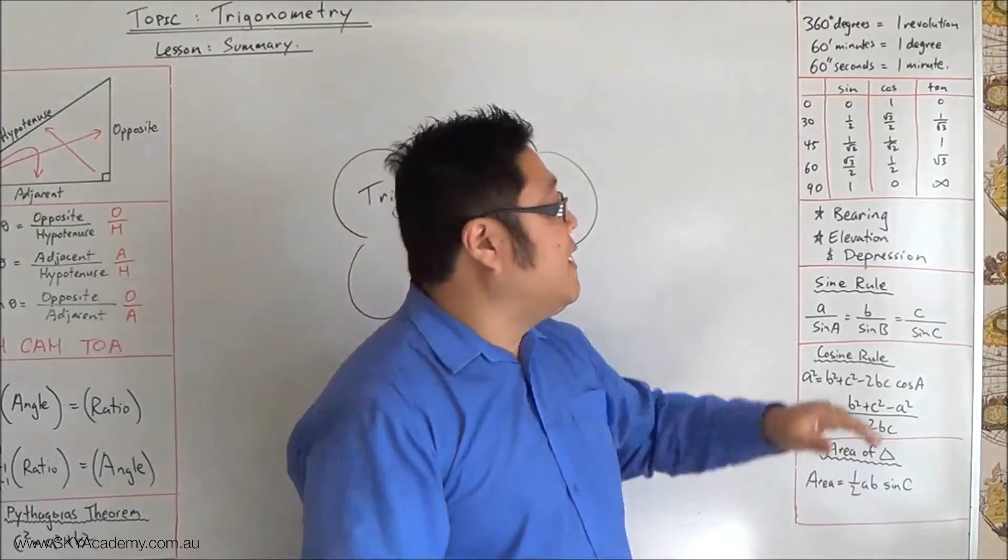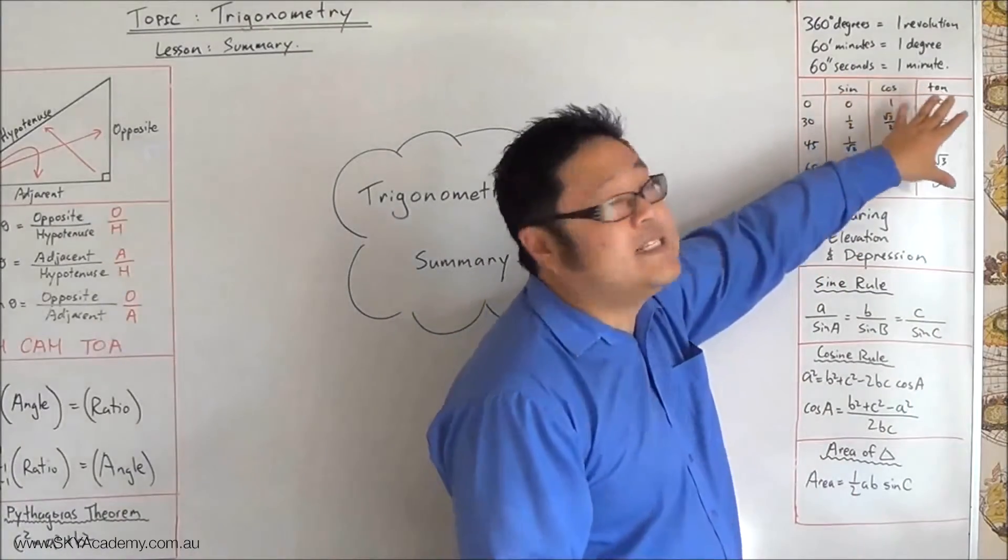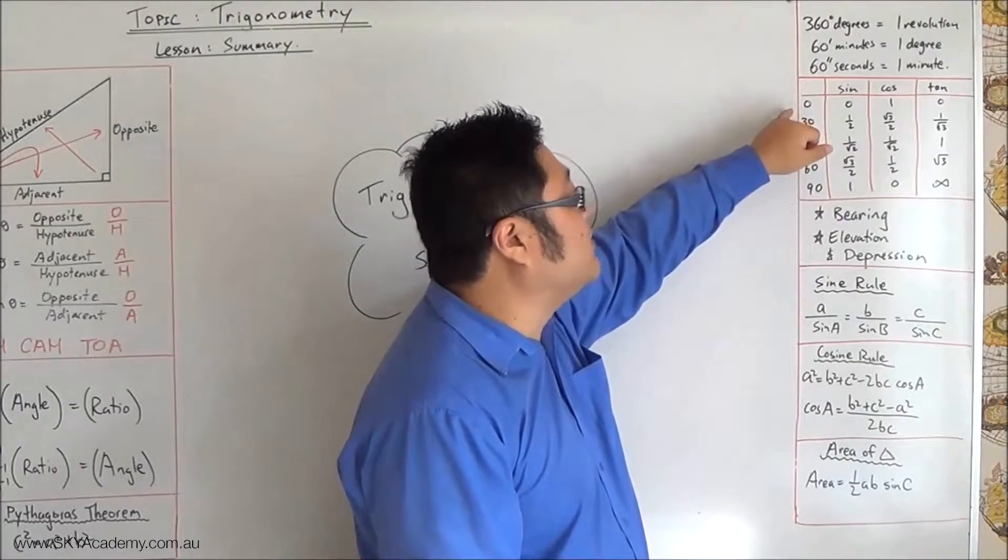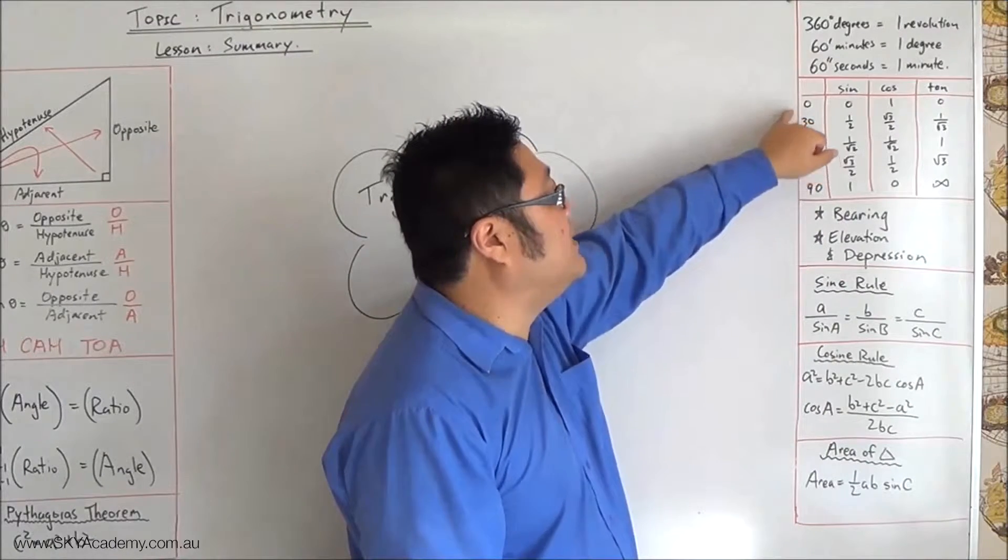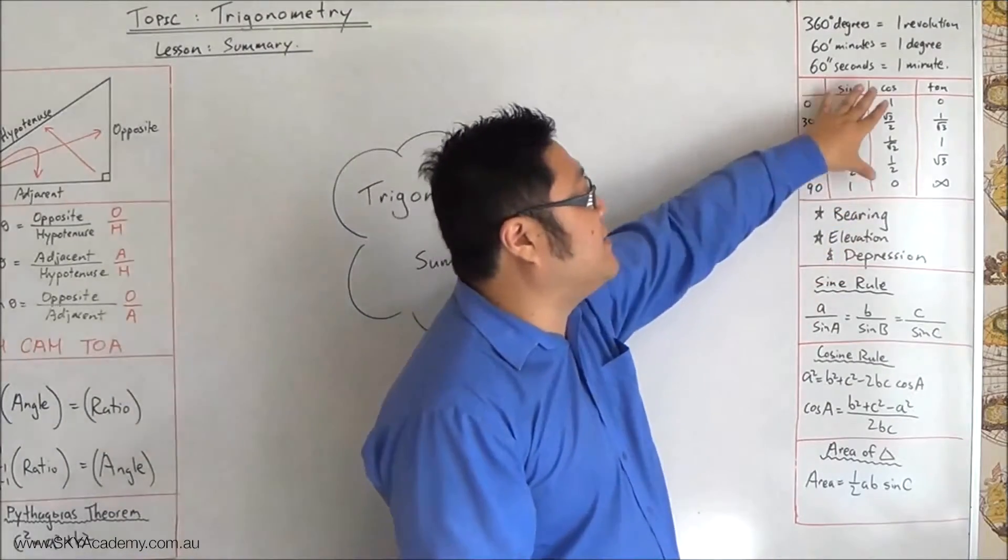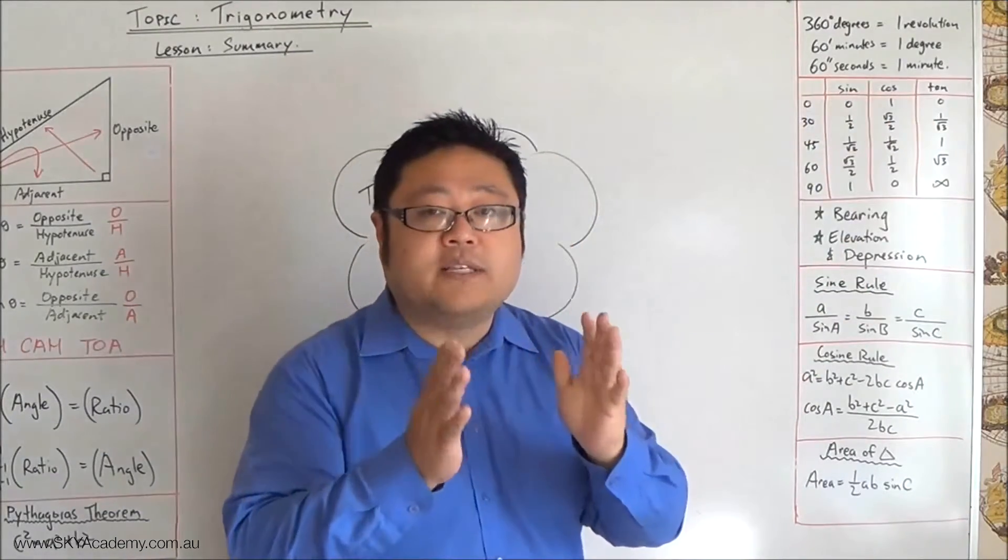And then we basically looked at exact ratios or exact values for the triangles which have degrees of 30, 45, 60, and 90. And we worked out that the sine, cosine, tan can be worked out exactly for those specific angles.